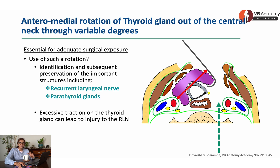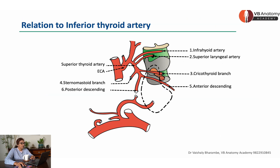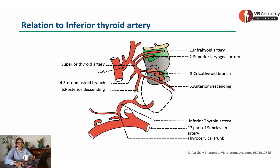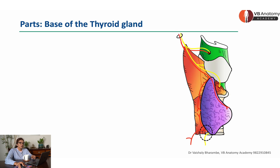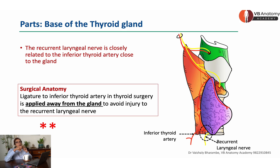A very commonly performed maneuver is to access the recurrent laryngeal nerve as well as the parathyroid glands. The inferior thyroid artery — a branch of the thyrocervical trunk from the first part of the subclavian — divides into ascending and descending branches. At the lower point, the inferior thyroid artery has a close relation with the recurrent laryngeal nerve. When they are close to the gland, they are very close together; when away from the gland, they are apart. So the lesson is: if you want to tie the inferior thyroid artery, tie it away from the gland — if you tie it close to the gland, you will damage the recurrent laryngeal nerve.